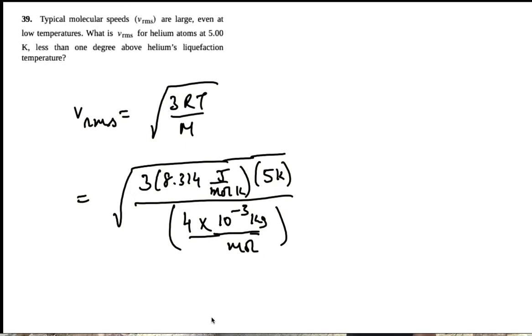So let's make sure the moles will cancel, kelvin cancels, and joules per kilogram is meters squared per second squared. And square root of that will give you meters per second.